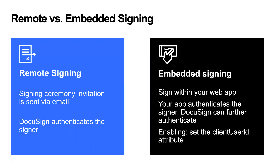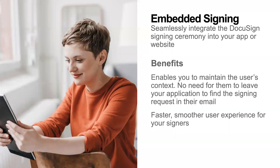The key step for turning on the behaviors of embedded signing within DocuSign is to set the client user ID attribute — that's for API embedded signing. The benefit of embedded signing is that it enables you as the application developer to maintain the user's context. They're using your website and then you want them to sign something. There's no need for them to leave your application to go find the request within their email. This provides a faster, smoother user experience for your signers, and embedded signing is in fact very common for our customer and partner developers.